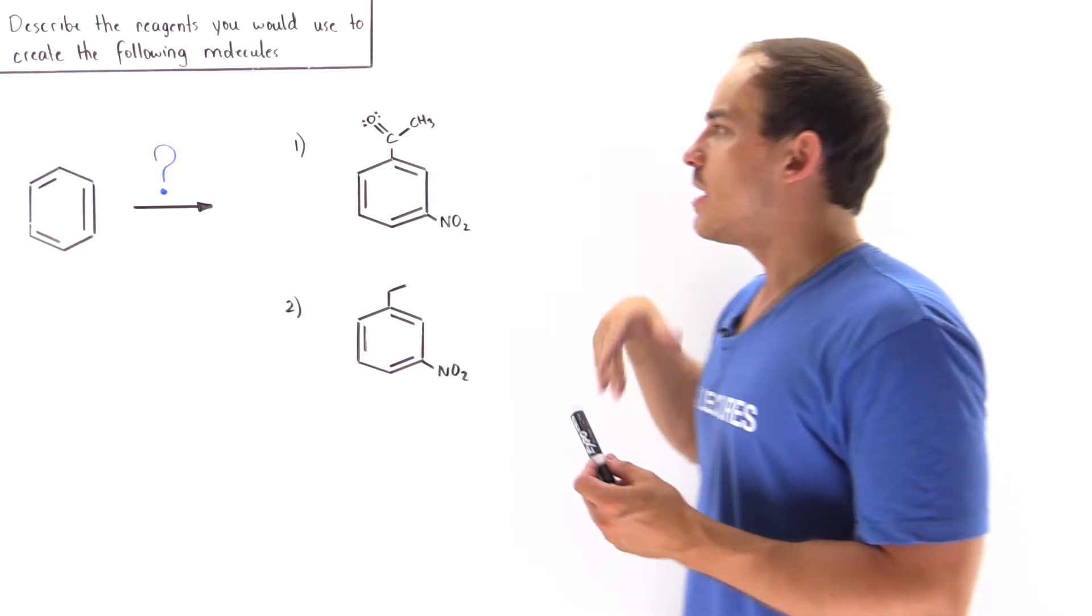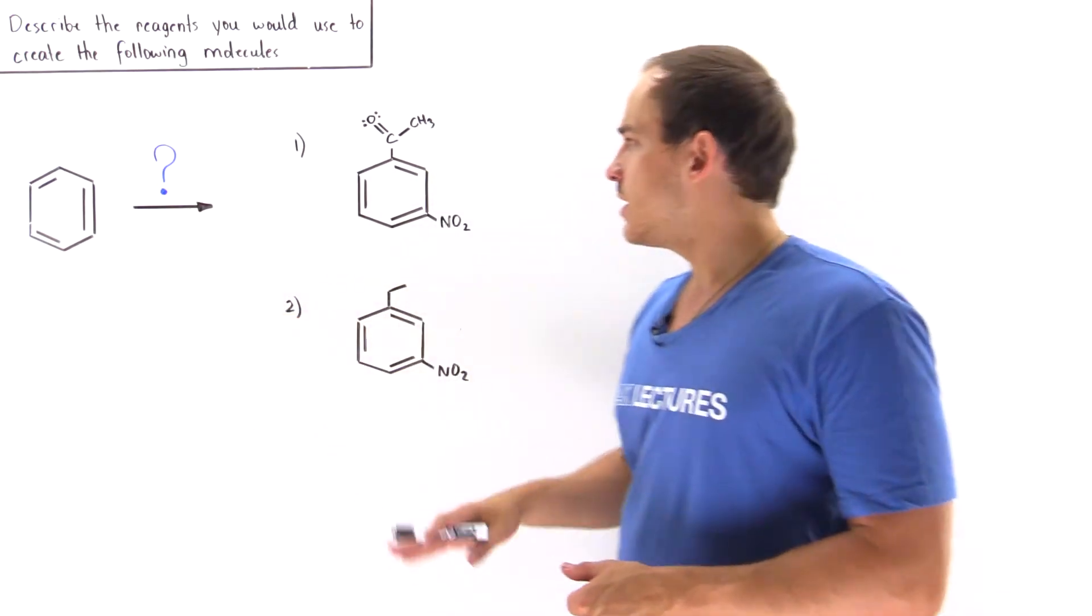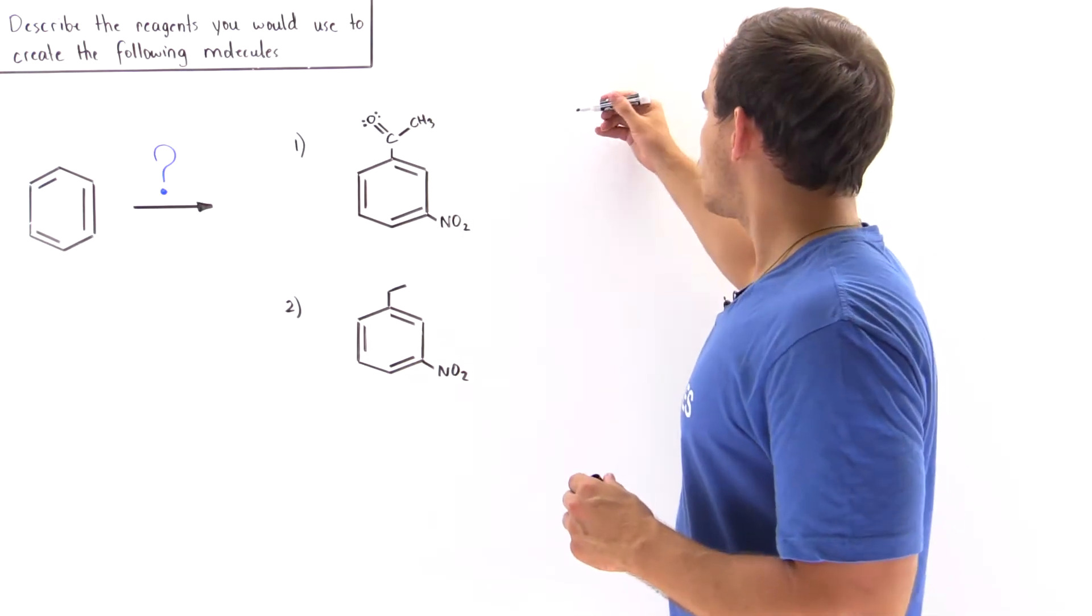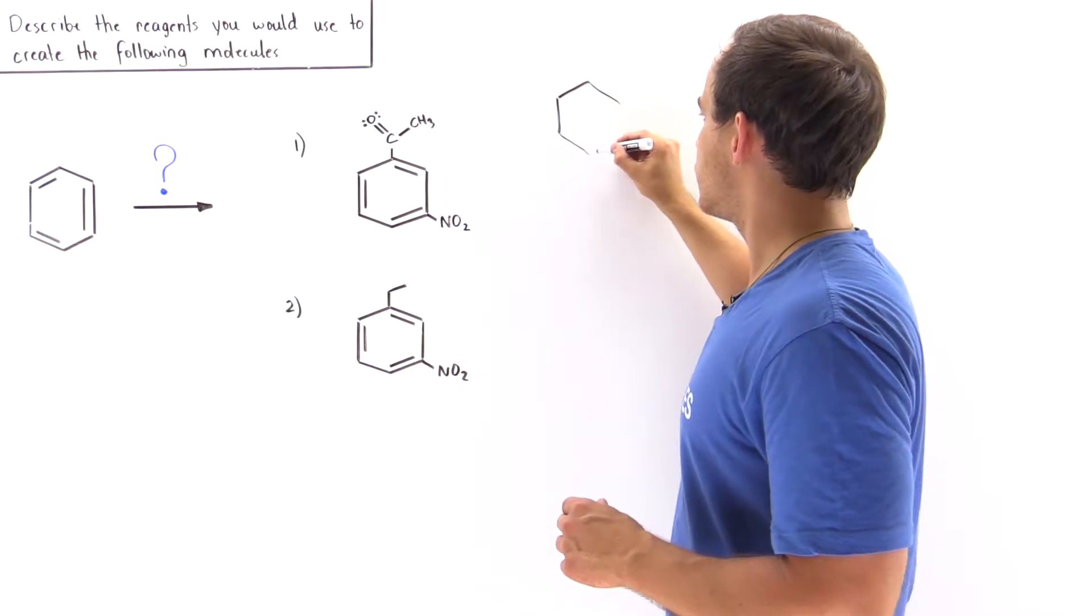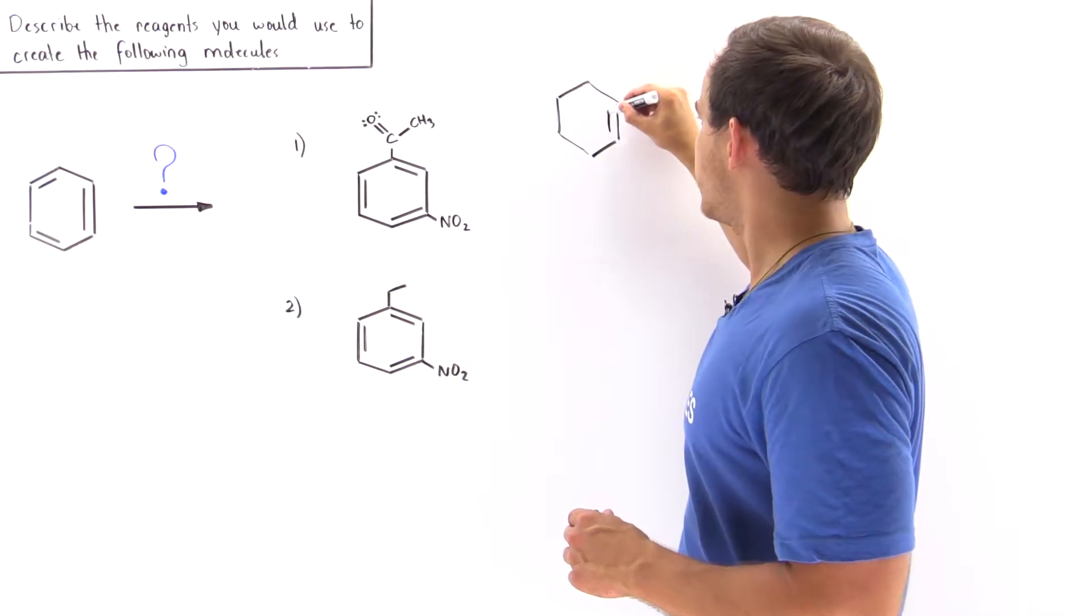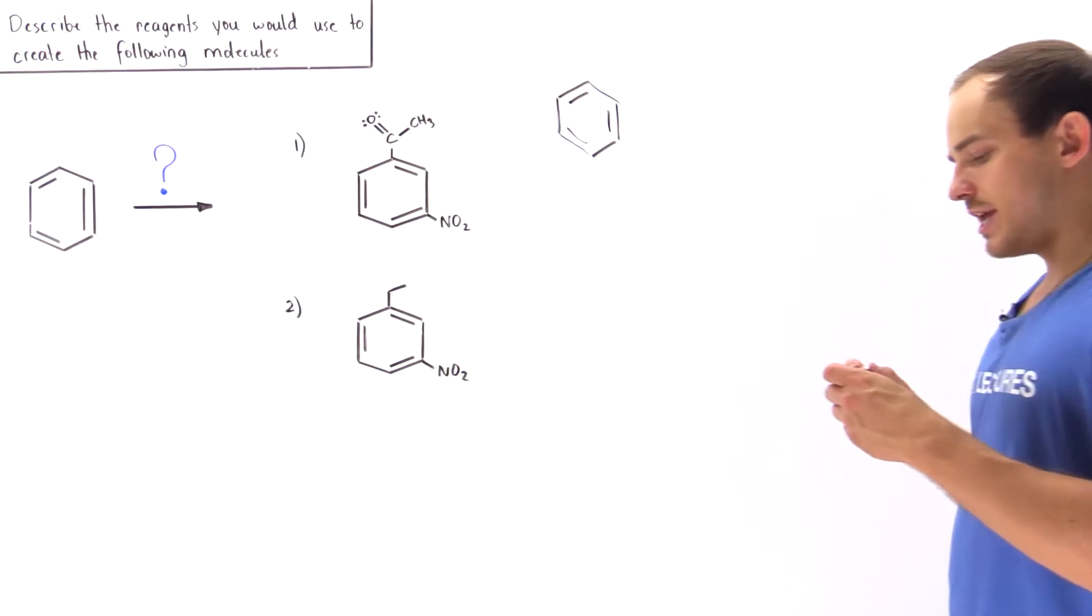So let's begin with product number one. How do we go from benzene to this product number one? Let's begin by drawing out our benzene starting material. We have our six-member ring with three pi bonds.